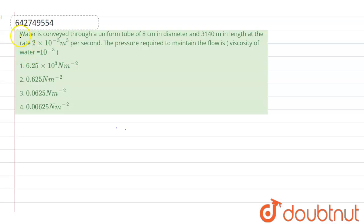In this question it says that water is conveyed through a uniform tube of 8 centimeter in diameter and 3140 meter in length at a rate of 2 into 10 raised to the power minus 3 meter cube per second. So the pressure required to maintain such flow will be. Let's start with this problem.